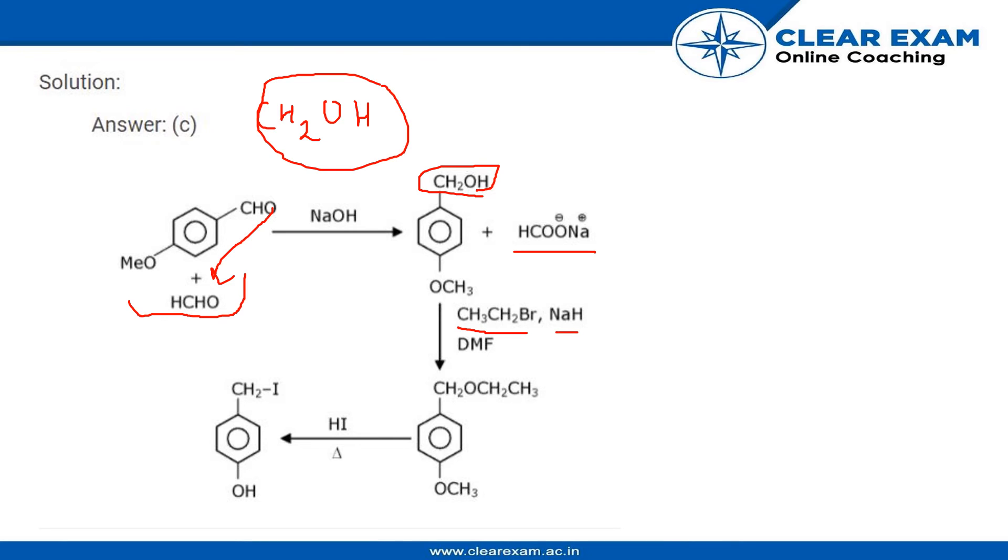When it reacts with CH3CH2Br, NaOH, and Dimethylformamide (DMF), which is a common solvent in chemical reactions, this acts as a solvent. The OCH3 group is not touched because we don't have a more supporting anion in this case.